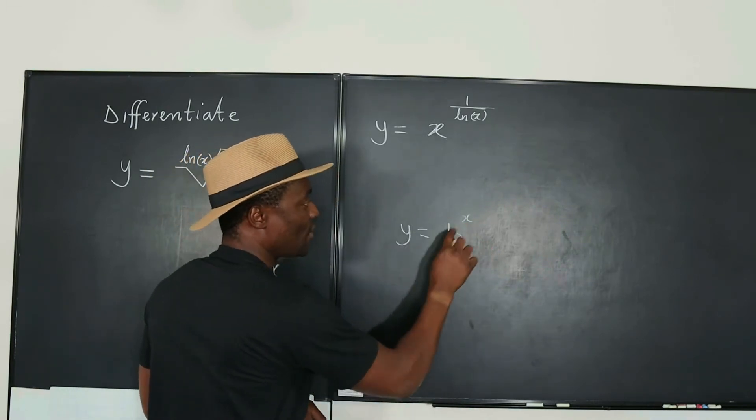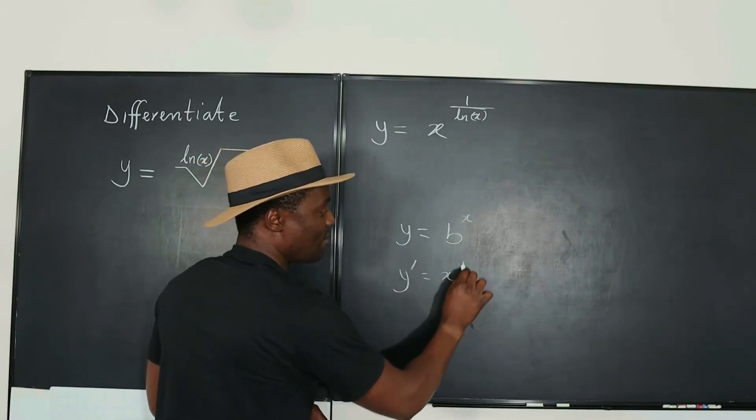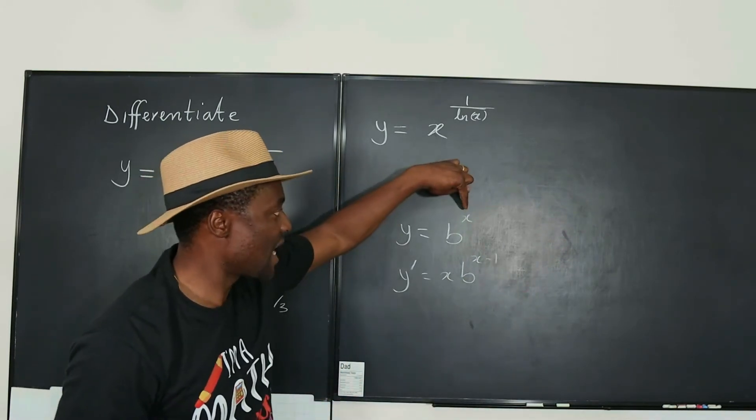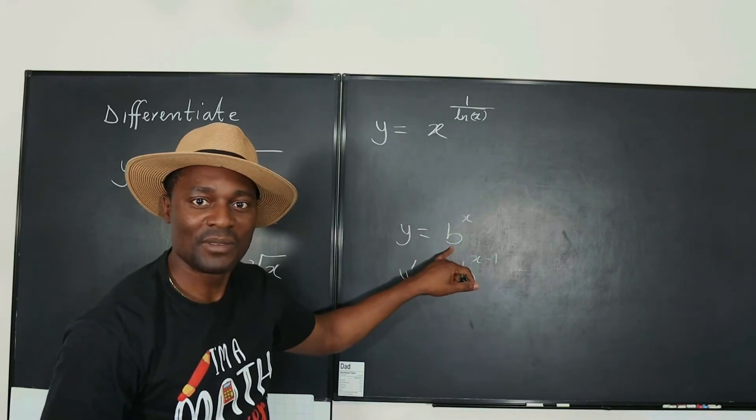don't say that the y prime will be x b raised to the power x minus 1. You can't do this, because the exponent is not a constant and the base is not a variable.